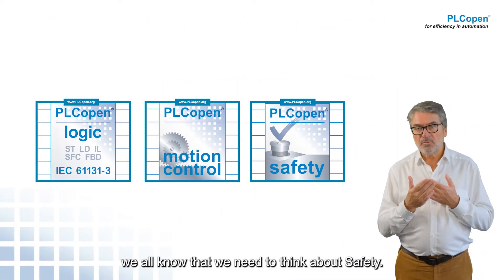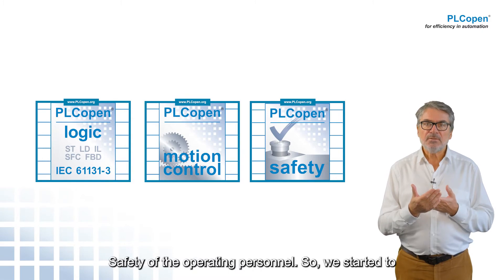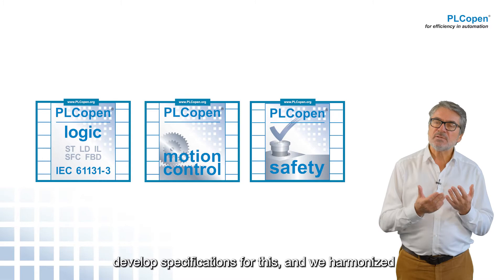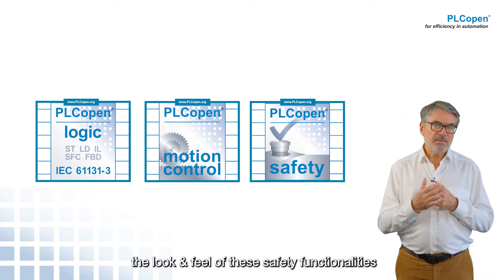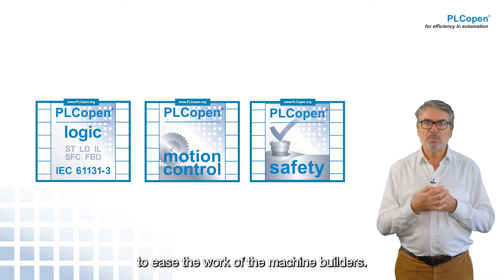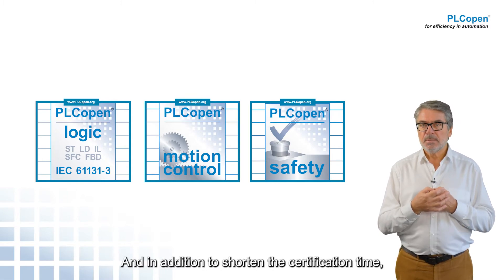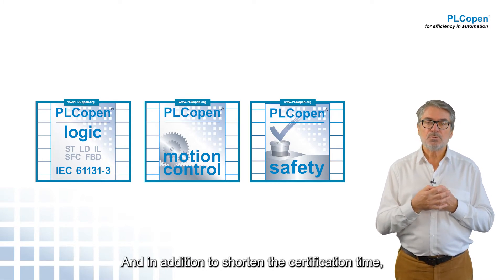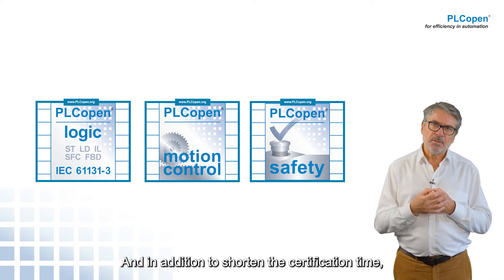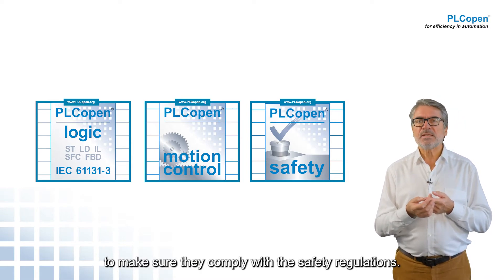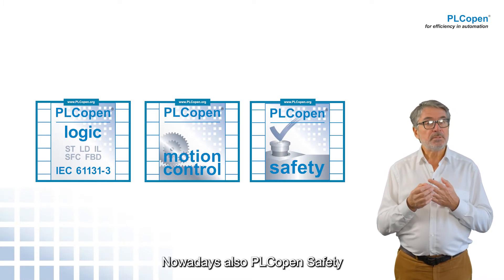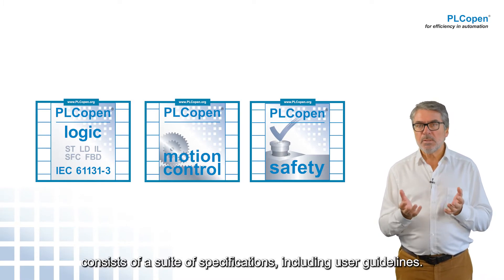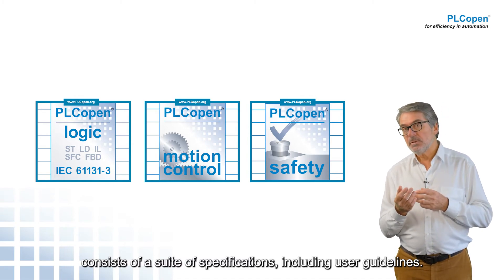When the machine starts moving, we all know that we need to think about safety — safety of the operating personnel. So we started to develop specifications for this, and we harmonized the look and feel of these safety functionalities to ease the work of the machine builders, and in addition to shorten the certification time, to make sure they comply with the safety regulations. Nowadays, PLC Open Safety also consists of a suite of specifications, including user guidelines.